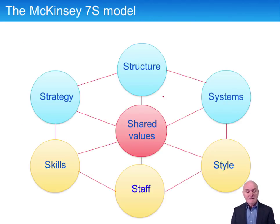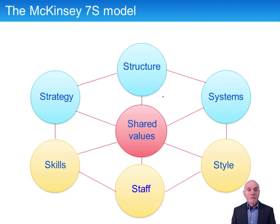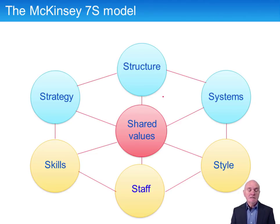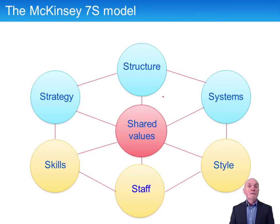The McKinsey 7S model says that when considering business structures and process change, there are seven things to consider. The three at the top — shown in blue — are known as the hard Ss. The yellow ones and the one in the middle, shared values, are known as the soft Ss. The hard Ss are relatively easy to pin down and write down, whereas the soft Ss are rather more difficult to define.